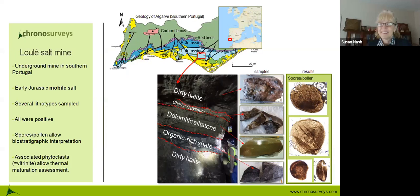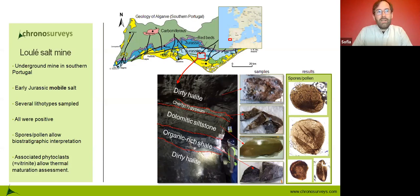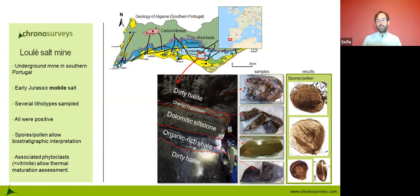That was an add-on discovery from this method: not only can we extract spores and pollen and some marine palynomorphs, but we can also measure vitrinite reflectance, and with that obtain quantitative thermal maturity. Some companies may not be so interested in the biostratigraphy, but being able to measure the thermal maturity of a salt sequence is actually a big plus — very important information in so many basins around the world.